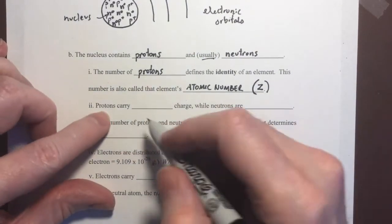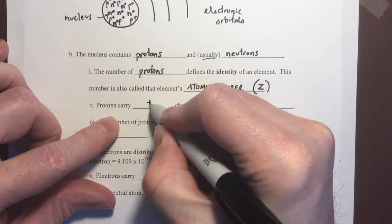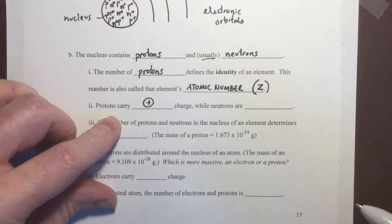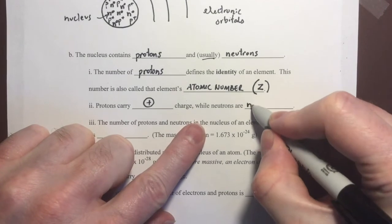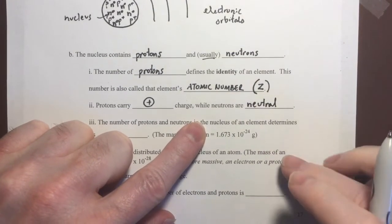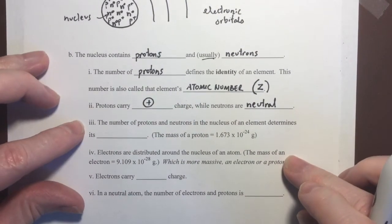And that atomic number is often abbreviated z. All right, next, we know that protons carry a positive charge. Protons are positively charged, and neutrons are neutral. They are not charged, or they have zero charge.